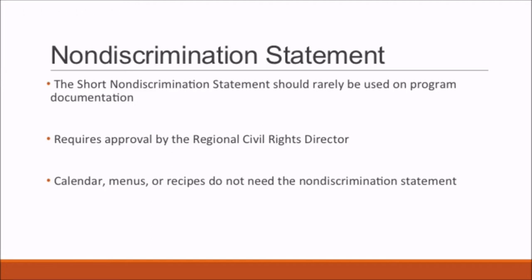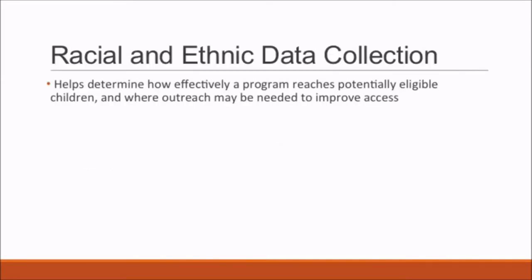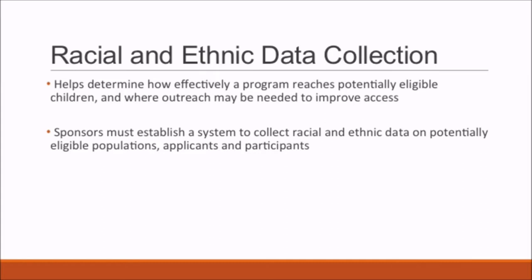Racial and Ethnic Data Collection. Data collection and reporting is a civil rights directive that helps determine how effectively a program reaches potentially eligible children and where outreach may be needed to improve access. To comply, sponsors must establish a system to collect racial and ethnic data on potentially eligible populations, applicants, and participants in their program service area. Self-identification is the preferred method of collection, and information must be protected from unauthorized use.